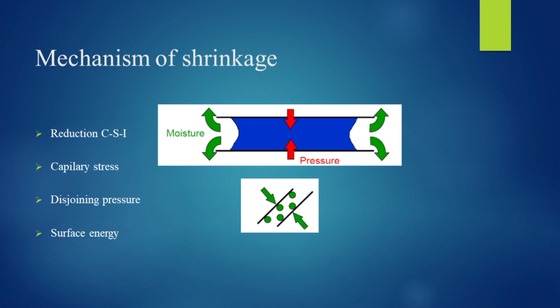The third mechanism: water is removed and the pressure will reduce in the concrete, causing shrinkage. The fourth and last mechanism: in the atmosphere, there is absorbed water on the surface of the concrete. When that absorbed water reduces, there is a change in surface energy, and this causes shrinkage.